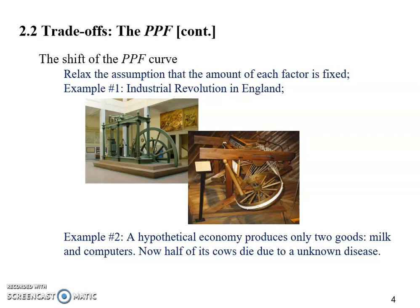Let me switch back to the PowerPoint slides, because there's one more example I want you to figure out. In this example, a hypothetical economy produces only two goods: milk and computers. Now, half of its cows die due to an unknown disease. You need to show the effect of this disease on a PPF graph. Pull out a piece of paper, use your pencil to draw, and during our virtual meeting we're going to talk about it.